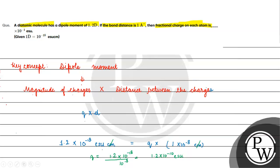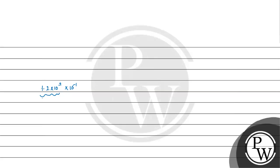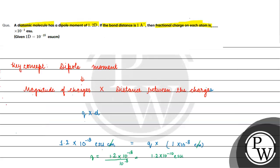The value 1.2 × 10⁻⁹ is very small — much smaller than 1. So when we write it as the nearest integer, it will be 0. The fractional charge equals 0 esu. I hope you understood it well. Thank you and all the best!